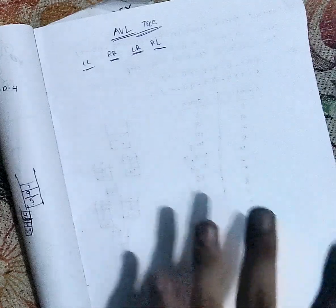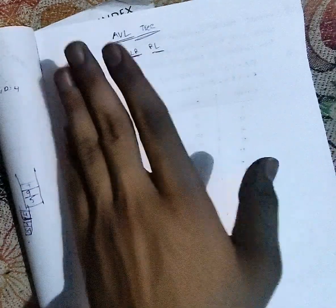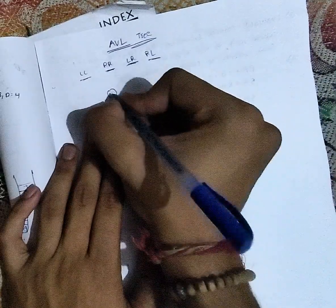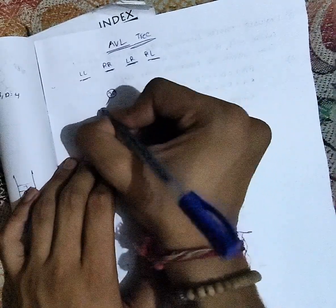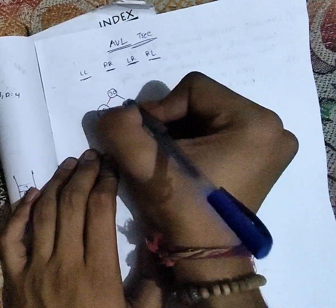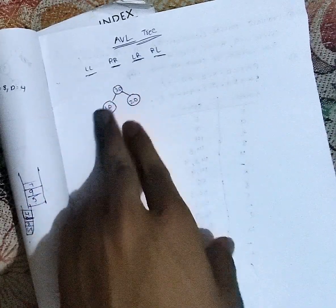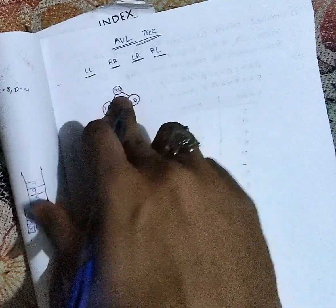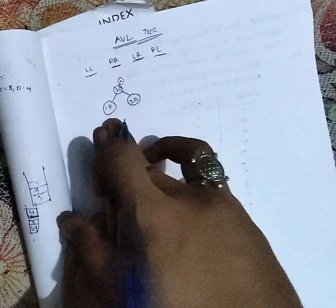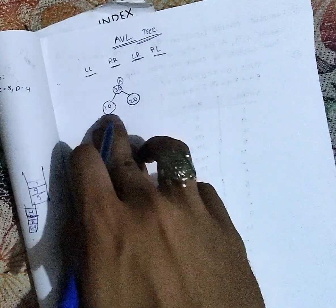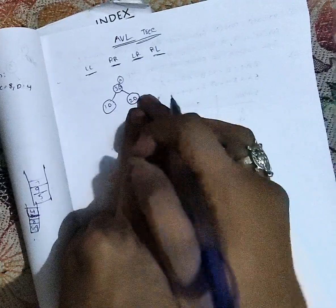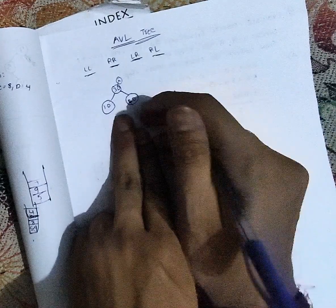If there is any unbalanced tree, we use rotations to balance it. Here I have taken one example tree. The left side of the root element is always smaller and the right side is greater than the root element. This tree is currently balanced.